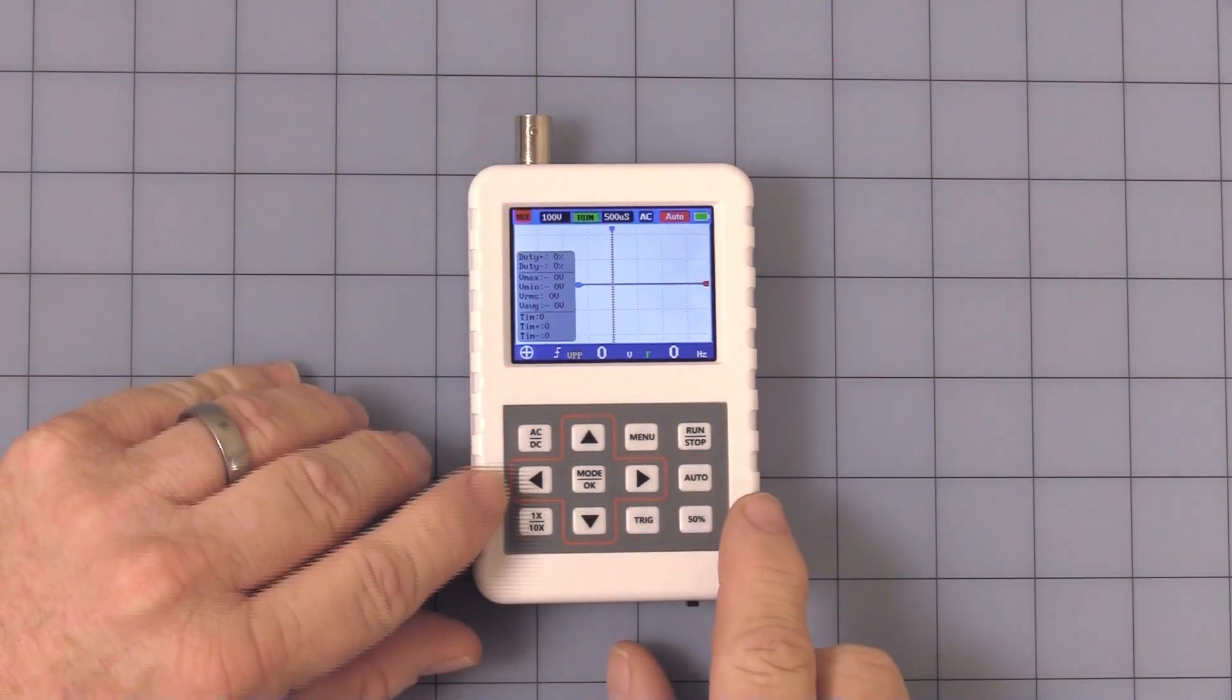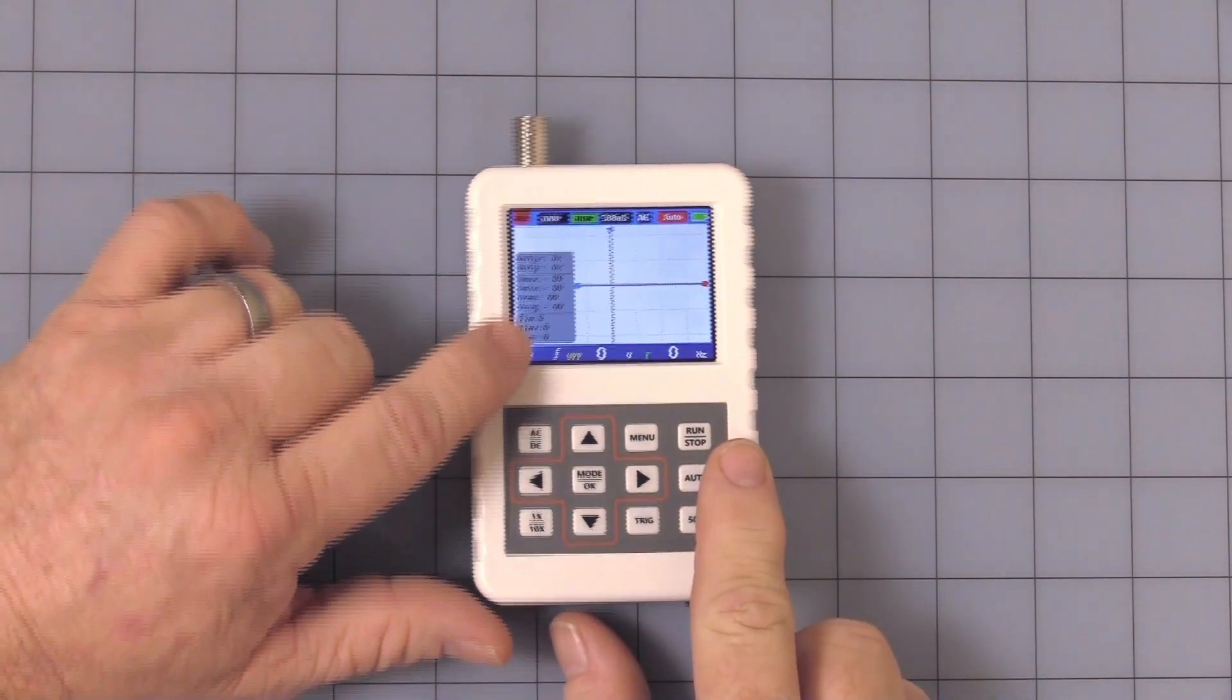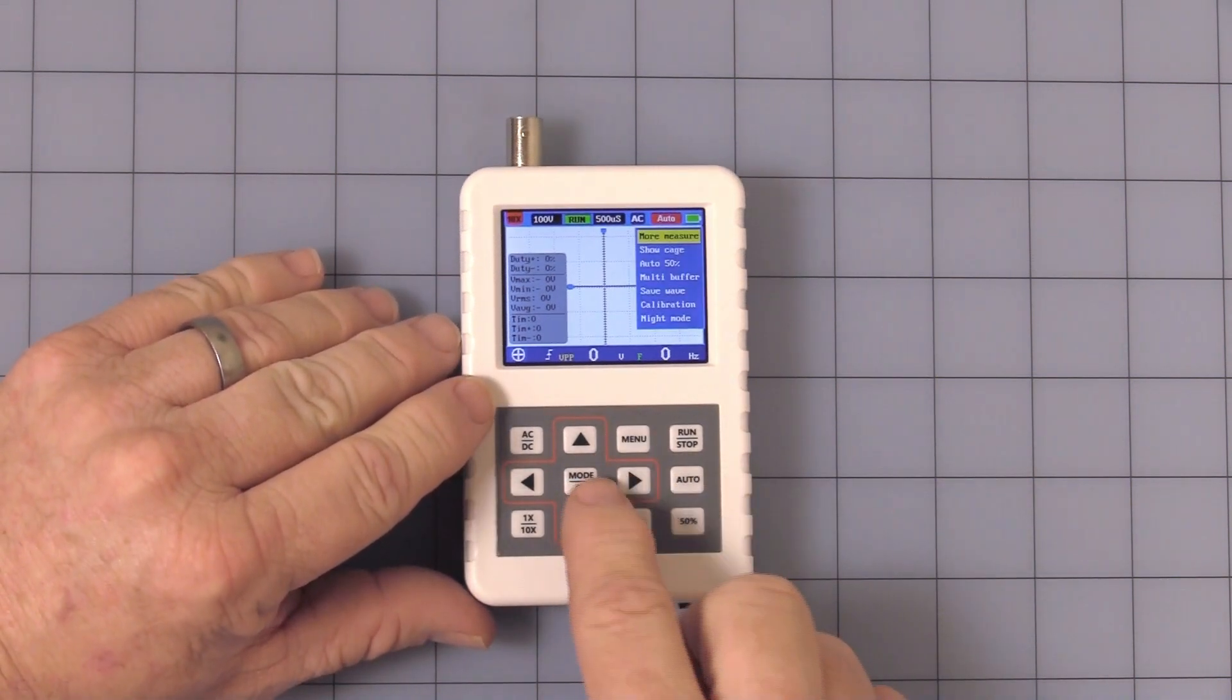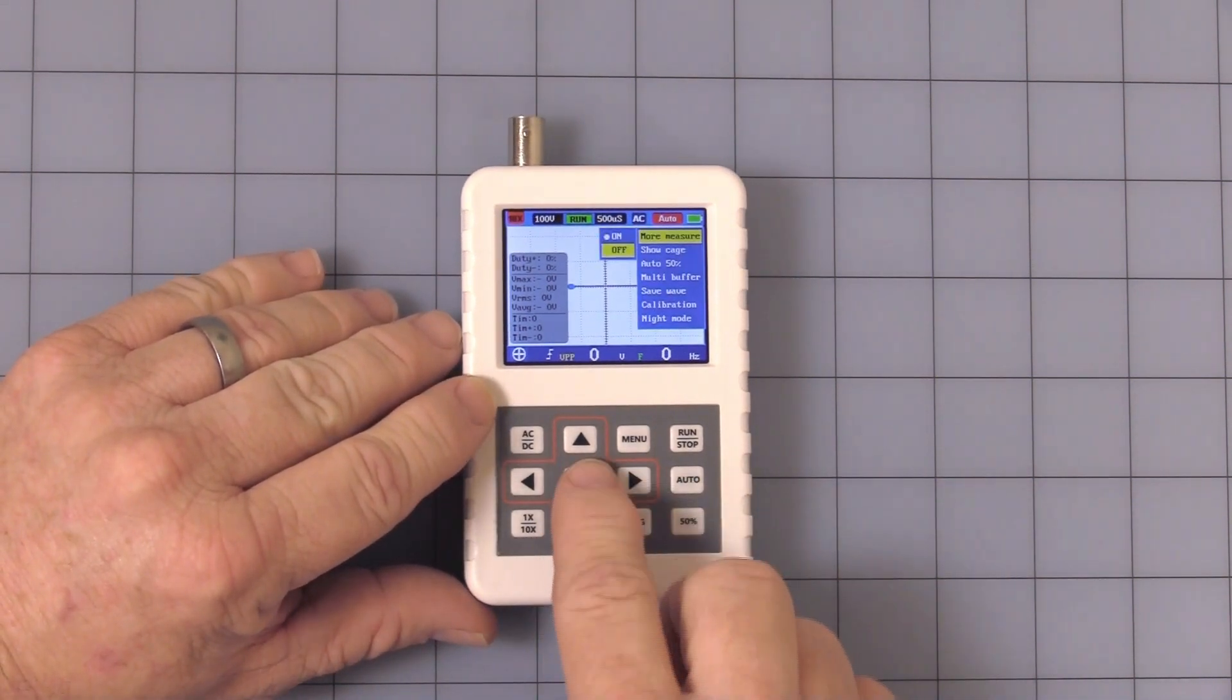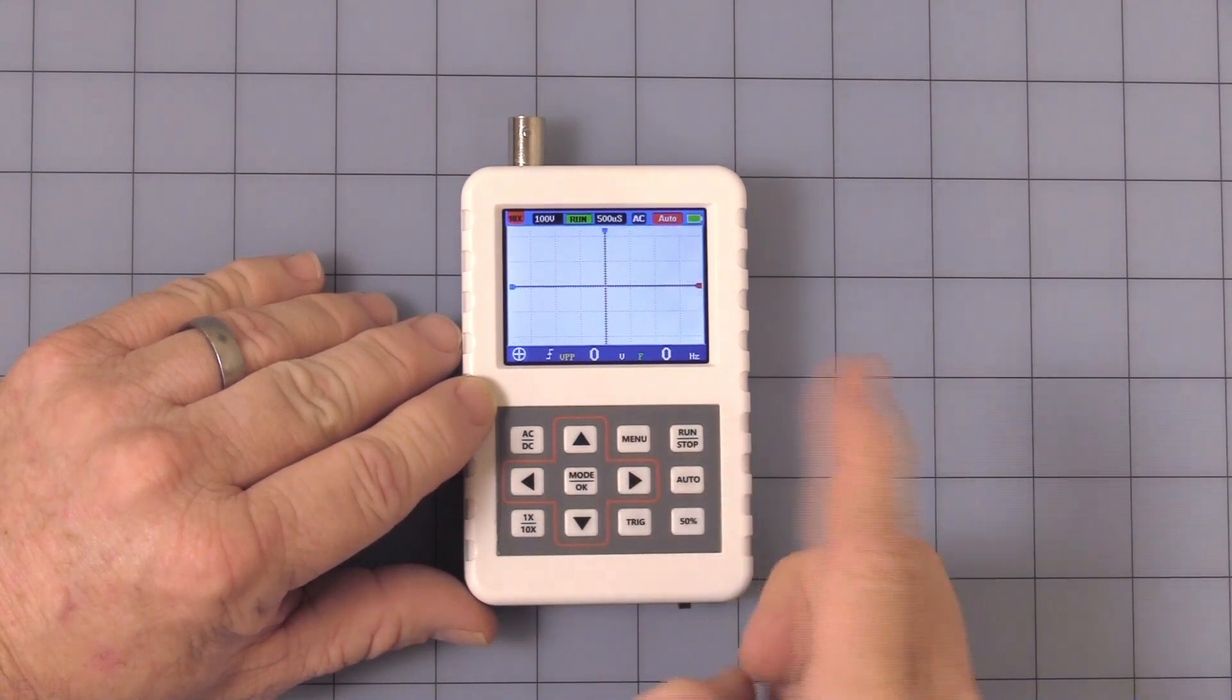When you hit menu again, it comes up with all the different measurements. Some people like it, some people don't. You can just simply again hit the buttons, OK, off, hit the menu, it disappears.